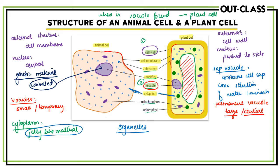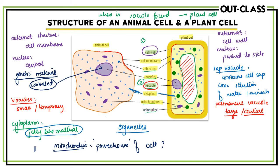Another very important structure is the mitochondria — the small purple structures visible here. The mitochondria are known as the powerhouse of the cell. All the energy produced inside the cell, that is needed inside the cell, is produced by the mitochondria. Think of them like a power station where electricity is generated — the mitochondria are the same thing, producing the cell's power.